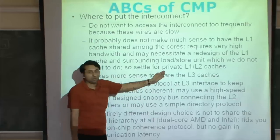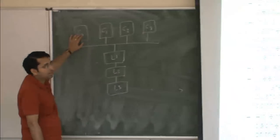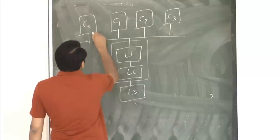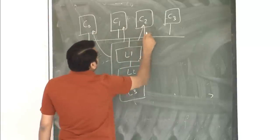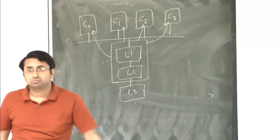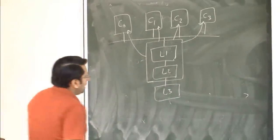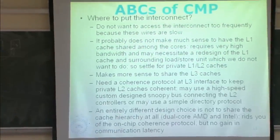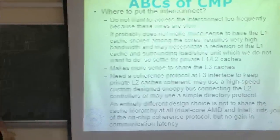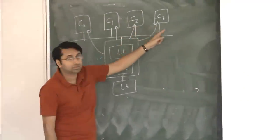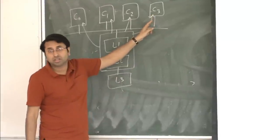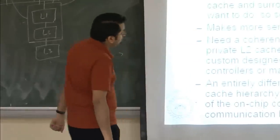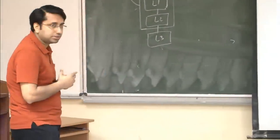What people do is settle for private L1 and L2 caches, so each core has a private hierarchy that can absorb most load-store operations. Today, the common approach is to put L1 and L2 privately with each core, and share the L3 cache on the other side of the interconnect. You need a coherence protocol at the L3 interface to keep the private L2 caches coherent — for example, if variable x resides in multiple L2 caches and one core writes a new value, you have to tell the others that the value has changed. That's called a coherence protocol.